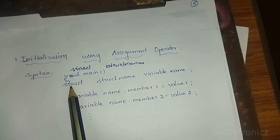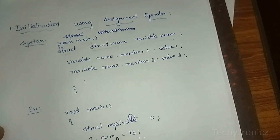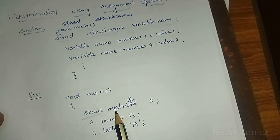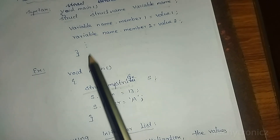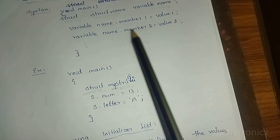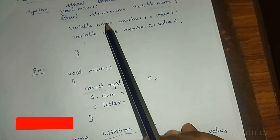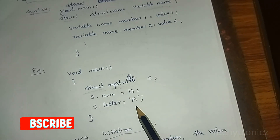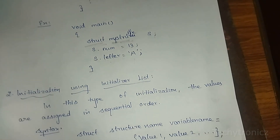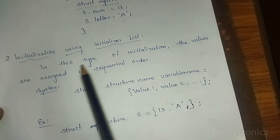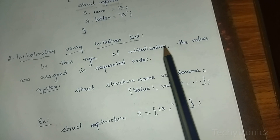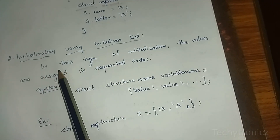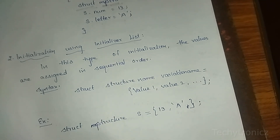For initialization using the assignment operator: in main, declare the structure variable using struct keyword, structure name, and variable name. Then assign values to each member individually using the dot operator and assignment operator in sequential order — the first member gets the first value, and so on.